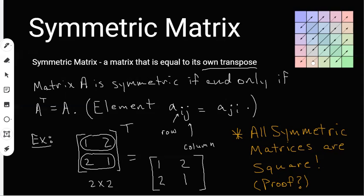Up here I have a diagram of how a symmetric matrix works. If you look at the main diagonal going from the top left to the bottom right, the blocks that are opposite each other across the main diagonal are going to be the same — this color matches this color, and so on for every block. Also, all symmetric matrices must be square, meaning a symmetric matrix must be a square matrix.